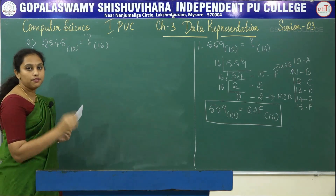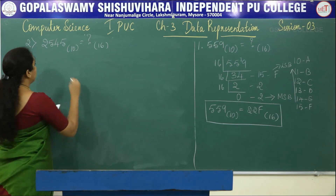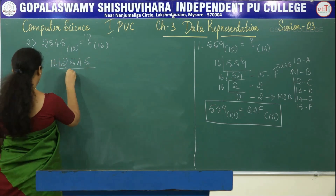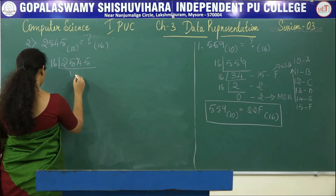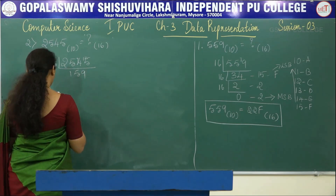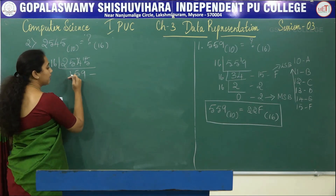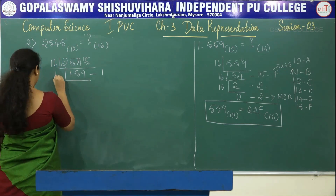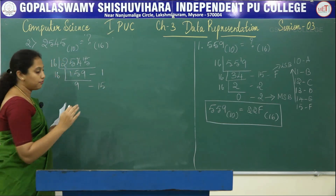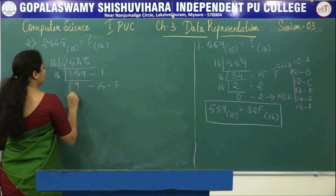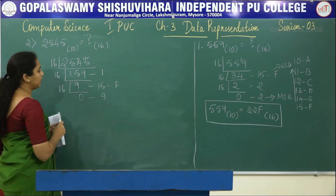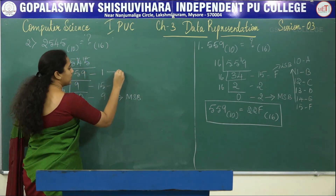The first step is to divide the given decimal number 2545 by 16. 16 times 1 is 16, with 9 carry. 16 times 5 is 80, and 14 is the remainder — we write 1 here. Next, 16 times 9 is 144, and 15 is the remainder, so we represent 15 as F in the hexadecimal number system. Then 16 times 0 is 0, and 9 is the remainder. We mark down the LSB and MSB: this is our MSB and this is our LSB.